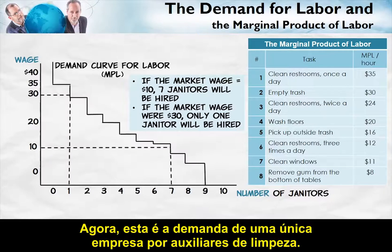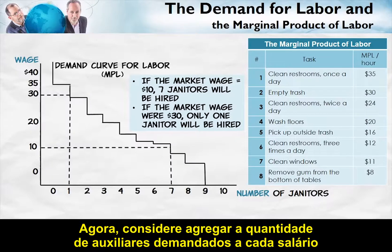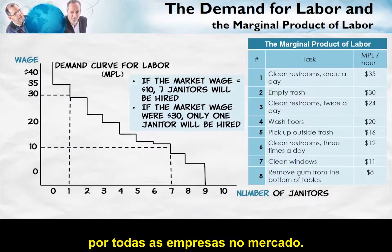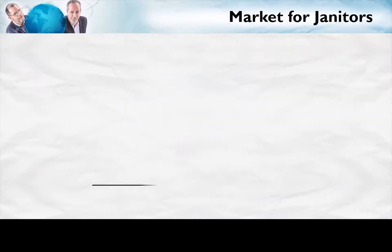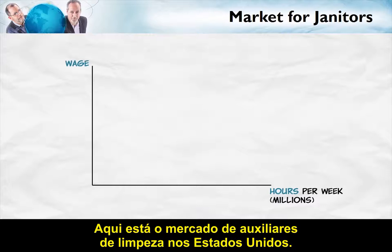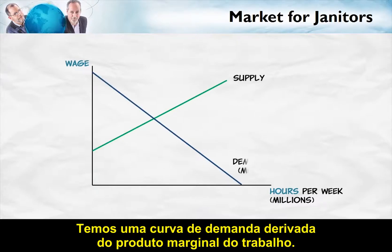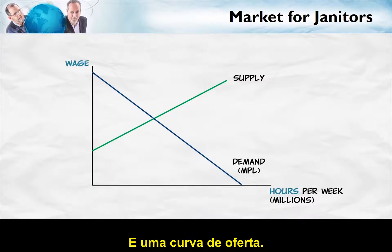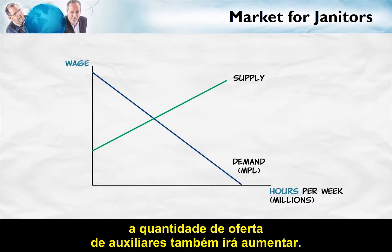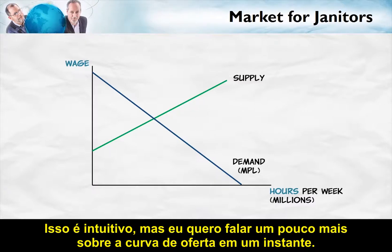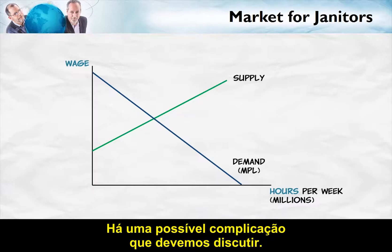This is the demand for janitors from a single firm. Now consider summing up the quantity of janitors demanded at each wage for all the firms in the market — that's how we get to the market demand for janitors. Here's the market for janitors in the United States. We have a demand curve derived from the marginal product of labor and a supply curve. The supply curve says that as the wage increases, the quantity of janitors supplied will also increase, though I want to say a bit more about the supply curve in a moment because there's one possible complication.